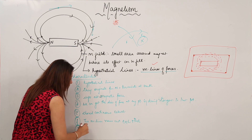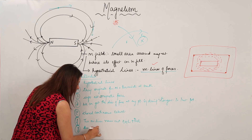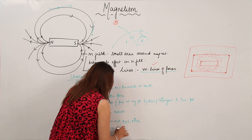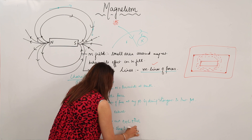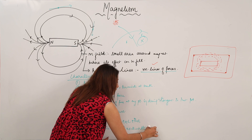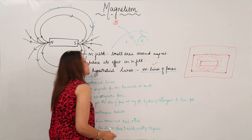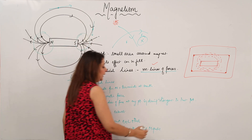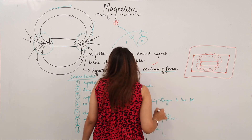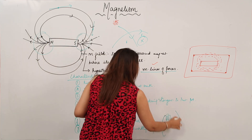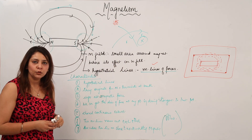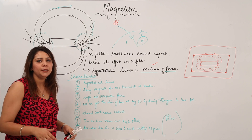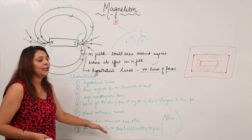The area where magnetic lines are closer to each other indicates strong magnetism. As you can see, they are closer near the poles, so strong magnetism exists at the poles. Where they are far apart — in the middle region — that indicates weak magnetism. These are the characteristics of the magnetic lines of forces.